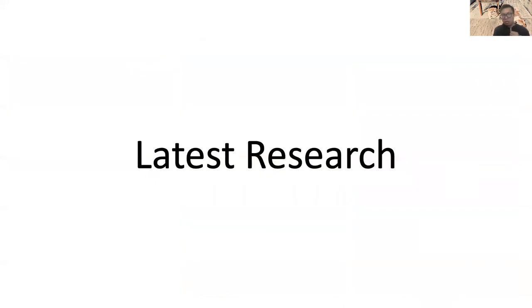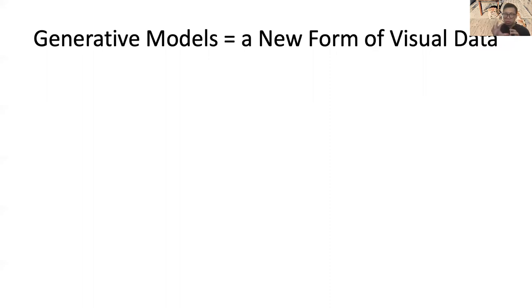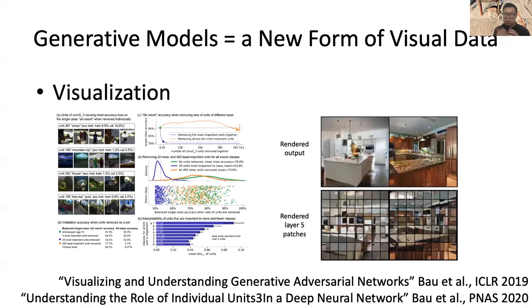More recently, I consider the generative model differently. Before, I saw the generative model as something that automates human-written image processing code. But more recently, I think the generative model is a new form of visual data — it's data itself. We need to consider it as an object, as data, rather than as a function or program. If it's data, we can visualize it: how do we understand what each unit or neuron is doing, and what kinds of images the model can produce.